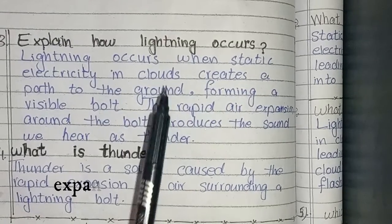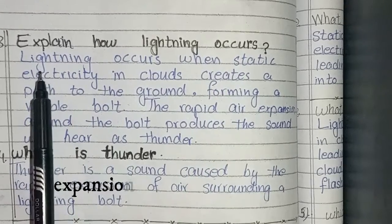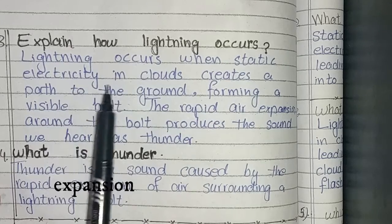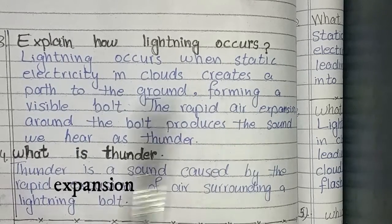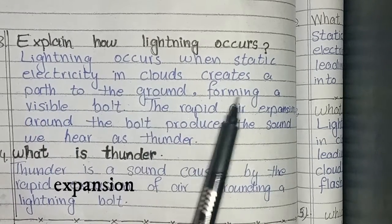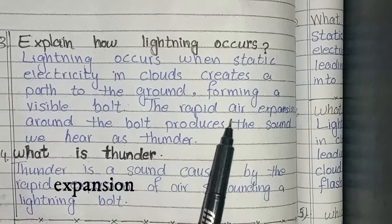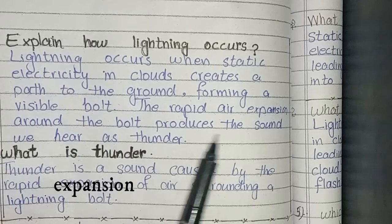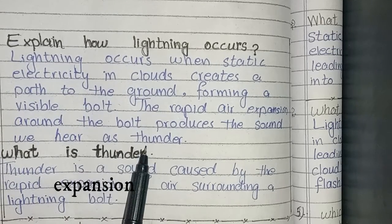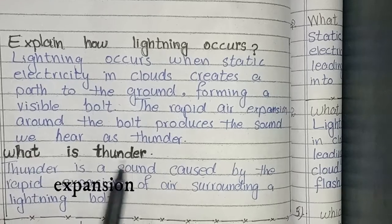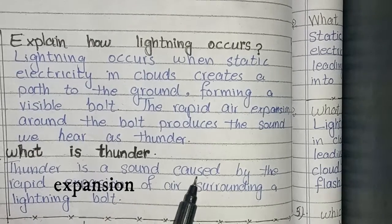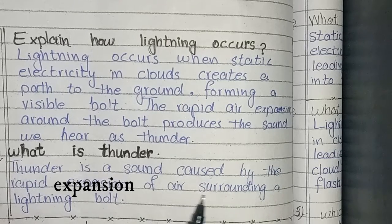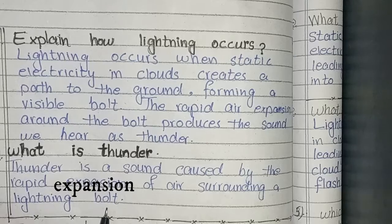Third question: Explain how lightning occurs. Lightning occurs when static electricity in clouds creates a path to the ground, forming a visible bolt. The rapid air expansion around the bolt produces the sound we hear as thunder. Thunder is a sound caused by the rapid expansion of air surrounding a lightning bolt.